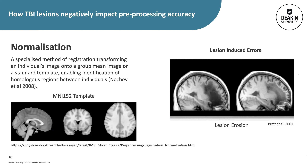Spatial normalisation is a specialised form of registration whereby the source image is matched to a group mean or standard template image. This establishes a one-to-one correspondence of brain regions across individuals and is critical for comparing patient populations to healthy controls. There is never a perfect fit between an individual brain and a template brain. The presence of a focal lesion greatly increases the difference between the individual and the template brain, thus reducing the best possible fit.